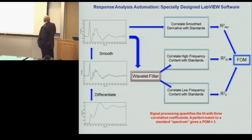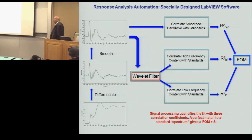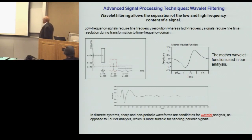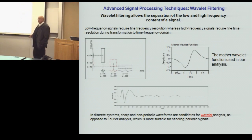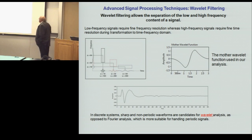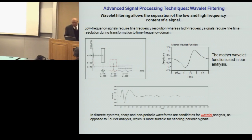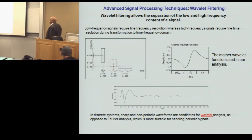The wavelet filter essentially allows us to differentiate high-frequency and low-frequency content in those waveforms, and then compare the wavelet-filtered standards to what we're getting under test conditions. From each of these we get a correlation coefficient. We sum those up to get what we call a figure of merit, which at maximum under perfect match conditions would give us three — one from each of these correlations. A comment about wavelet filtering: you might say, why not use Fourier transforms? Wavelet filtering tends to be more applicable for these kinds of signals and retains better resolution across the frequency spectrum.